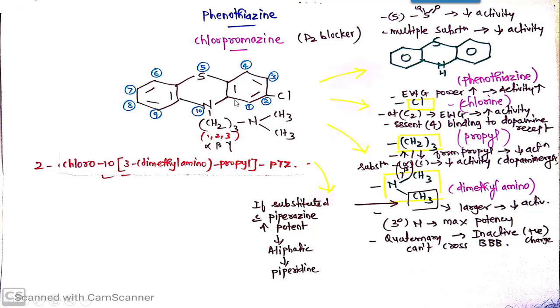Now coming towards the basic moiety, that is Phenothiazine ring. In sulfur which is at 5th position, if there is a presence of sulfone then it leads to decrease in activity. Multiple substituents on the Phenothiazine ring will decrease the activity. Electron withdrawing group if present, for example chlorine at second position, will increase the activity.